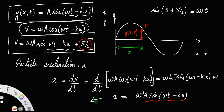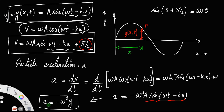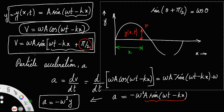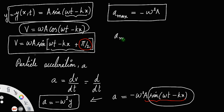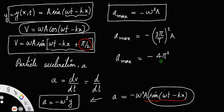So acceleration equals −ω²·y. For the maximum acceleration, the maximum value of sin is 1, so maximum acceleration equals ω²·a. Since ω = 2π/T, we have a_max = (2π/T)²·a = 4π²/T²·a.